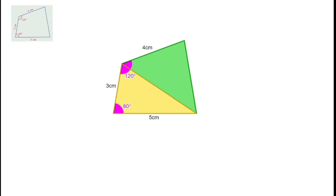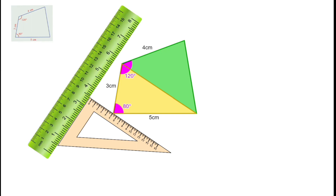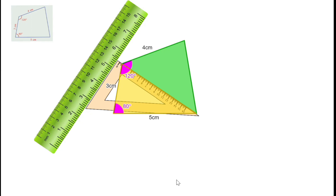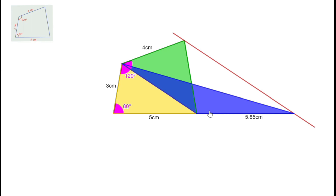Take the green triangle and convert it into another triangle of the same area so that it joins together with the first triangle to make a big triangle. Draw a line parallel to the base using a set square — place it, then shift the set square to the opposite vertex. Extend the base to meet this parallel line, then join the intersecting point to the ends of the base. Now this blue triangle has the same area as the green triangle.